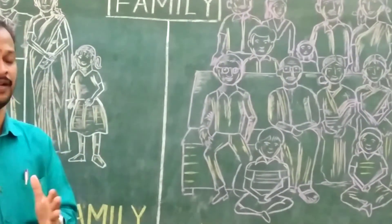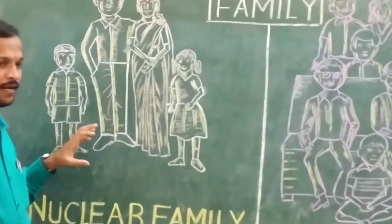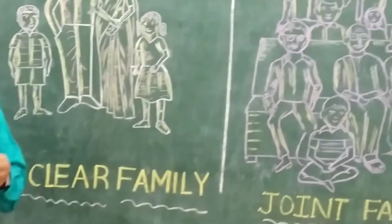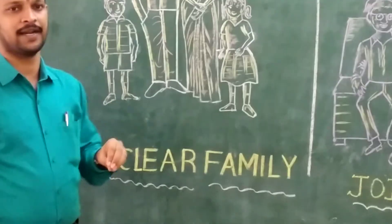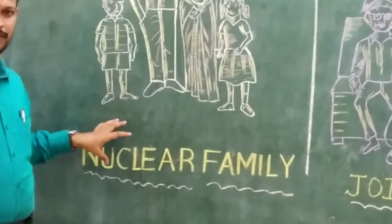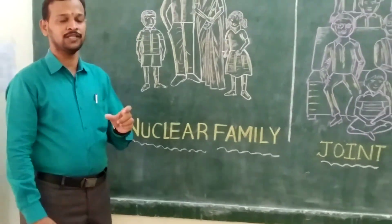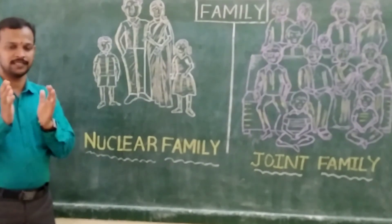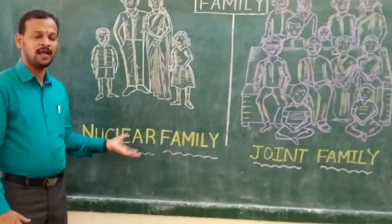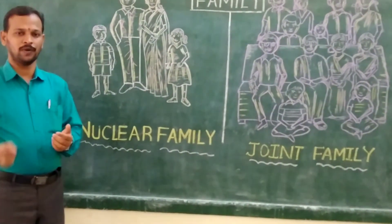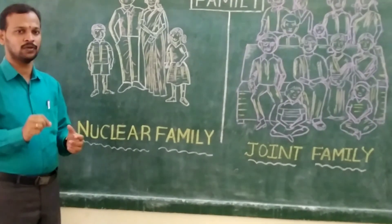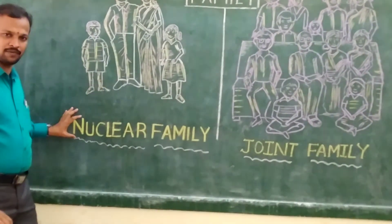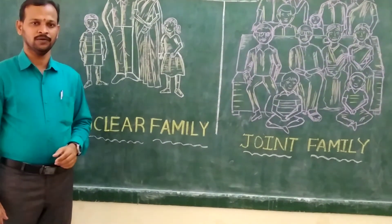Dear children, you have to go through once again the face sheet of the first unit, Family, and try to understand what is family, what is nuclear family, and what is joint family. I have also given you some questions in the form of a pre-test, and most of the children answered correctly. Please note down in your notebook the differences and variations between nuclear family and joint family, and the advantages and disadvantages of nuclear family and joint family. Thank you, children.